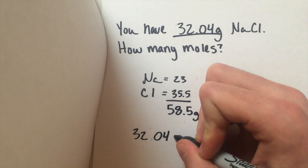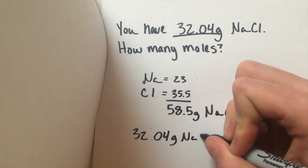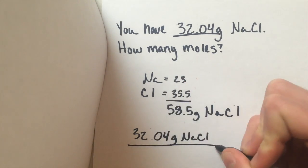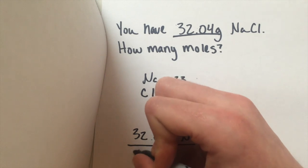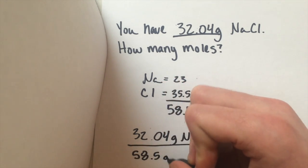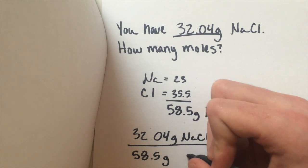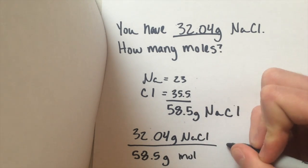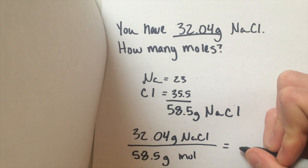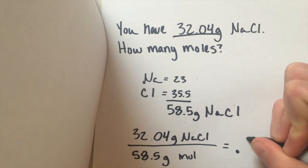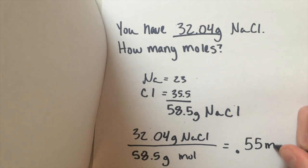So 32.04 grams of sodium chloride over 58.5 grams per mole. And that will leave you with 0.55 moles of NaCl.